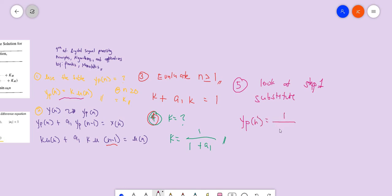One over one plus a sub one times u(n), assuming that n is greater than or equal to n one. So that's our video on how to solve this particular solution.